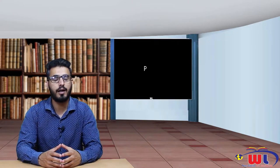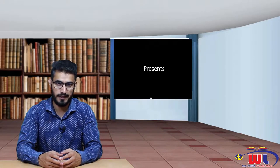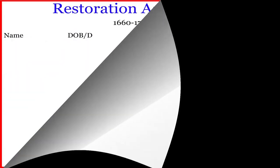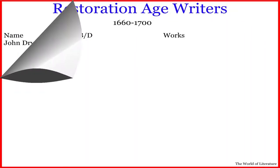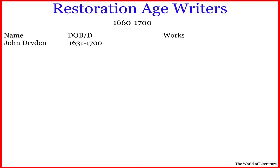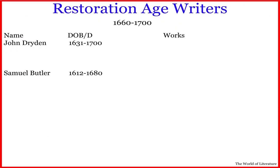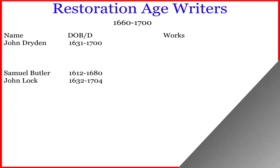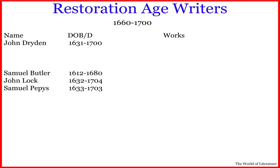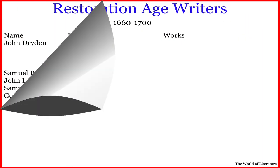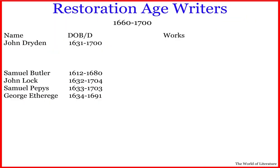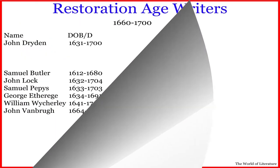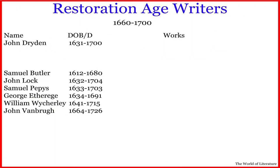Who are the important writers from this age? We have John Dryden, Samuel Butler, John Locke, Samuel Pepys, George Ethridge, William Wycherley, John Vanbrugh, and William Congreve.